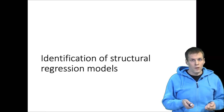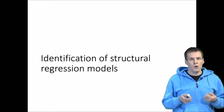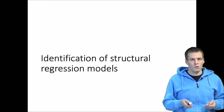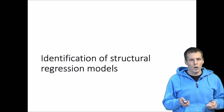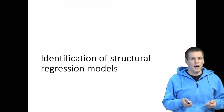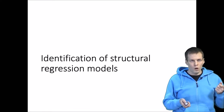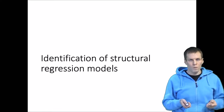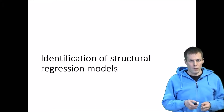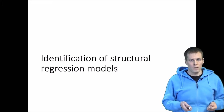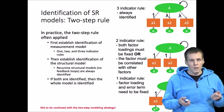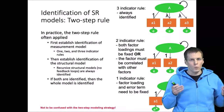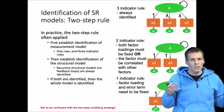The identification strategy of structural regression models is actually very simple if you know how confirmatory factor analysis models and path analytical models are identified. The identification is basically what we call a two-step rule.